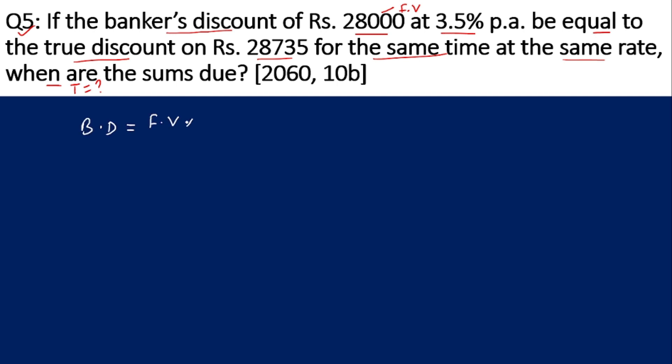First we find the banker's discount based on the given information. Formula is FV times T times R divided by 100. FV is 28,000, multiplied by time T, rate is 3.5, divided by 100. We can simplify by canceling zeros. 280 times 3.5 gives 980T. This is our first relation.